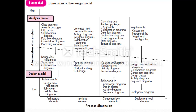Coming to the process dimension elements, there are different types: architectural elements, interface elements, component level elements, and deployment level elements. The base concept for all of these is data design elements. Data design elements represent data objects and classes — the base class diagrams.